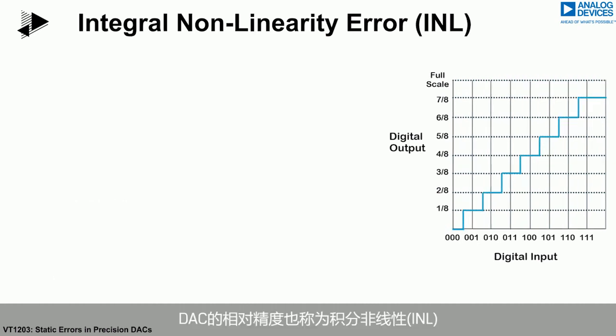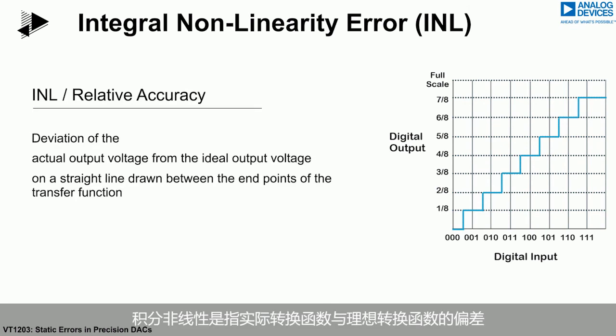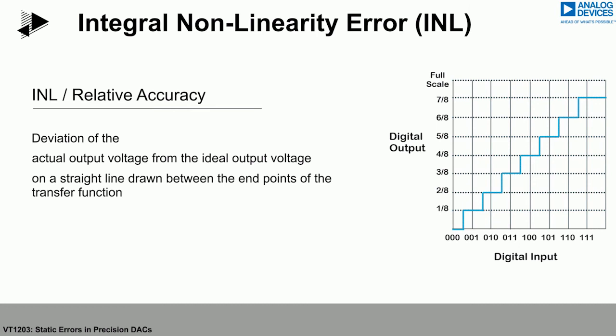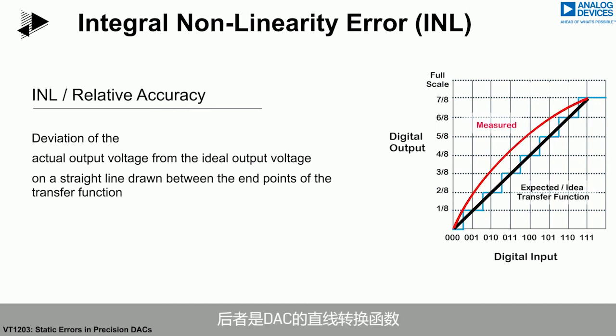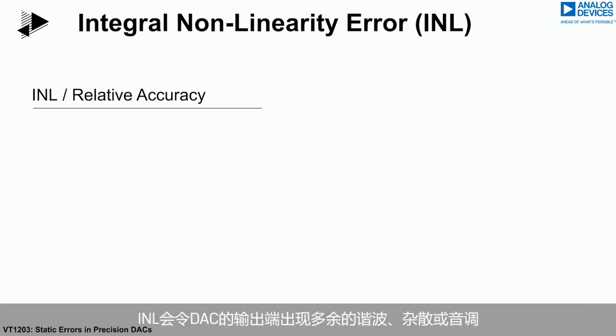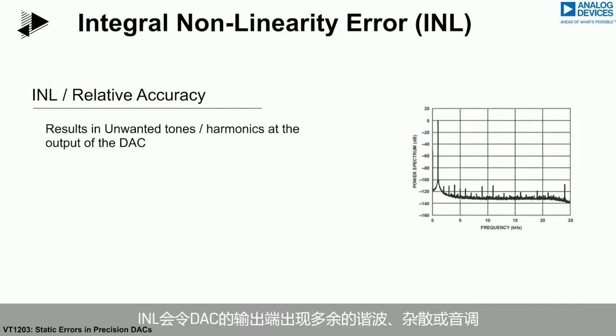The relative accuracy of a DAC is also known as integral non-linearity, or INL. INL is the deviation of the actual transfer function from the expected straight-line transfer function of the DAC. INL results in the addition of unwanted harmonics and spurs or tones at the output of the DAC.